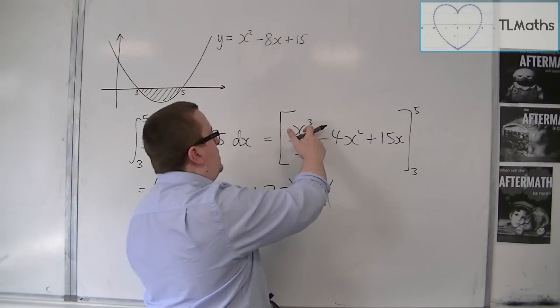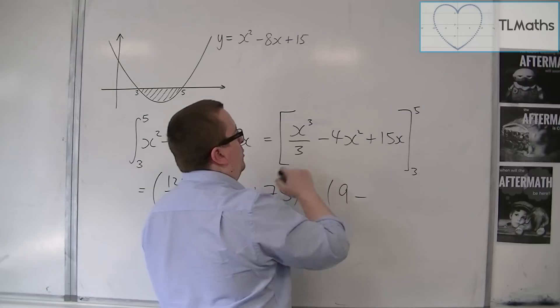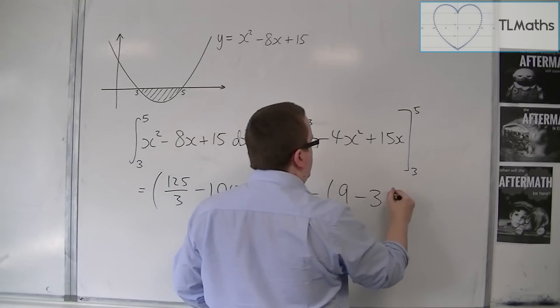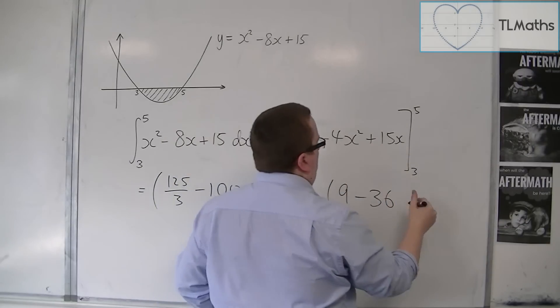3 cubed is 27 divided by 3 is 9, take away 4 lots of 9, so 36, and then plus 45.